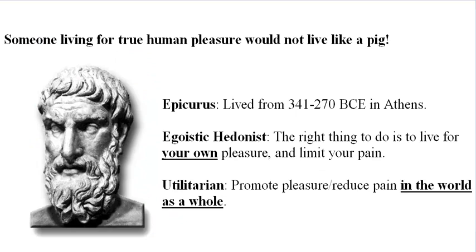Someone living for true human pleasure would not live like a pig. Mill brings up Epicurus here to contextualize his objection to hedonistic theories. Hedonism is the view that promoting pleasure is the only good and that causing pain is the only bad. Epicurus agreed with this claim, but Epicurus was not a utilitarian — he was an egoistic hedonist, meaning he believed that the good life was a matter of getting his own pleasure and avoiding his own pain, unlike the utilitarians who believed in maximizing pleasure and minimizing pain for everyone.